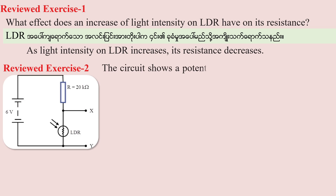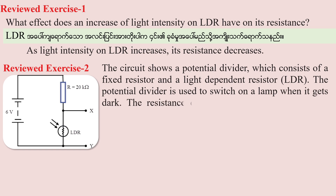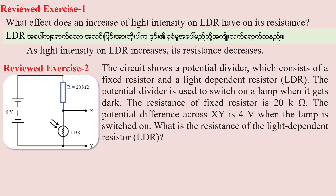Review question 2: The circuit shows a potential divider consisting of a fixed resistor and a light-dependent resistor. The potential divider is used to switch on a lamp when it gets dark. The resistance of the fixed resistor is 20 kilohms. The potential difference across XY is 2V when the lamp is switched on. What is the resistance of the LDR?